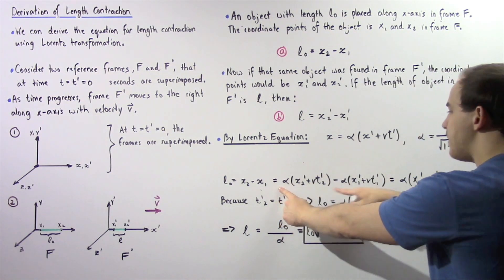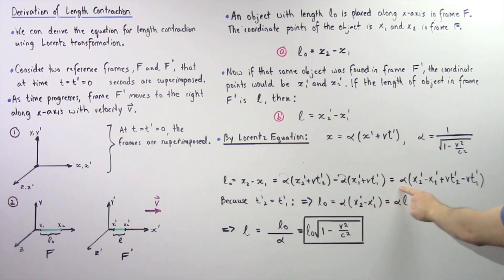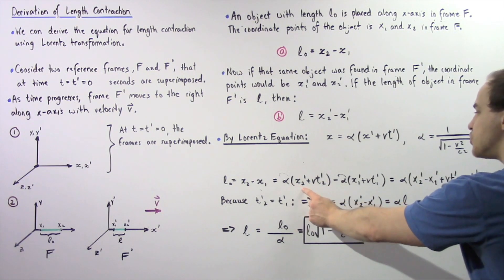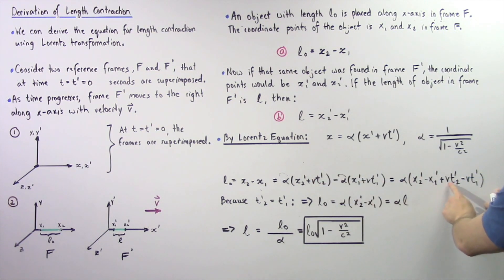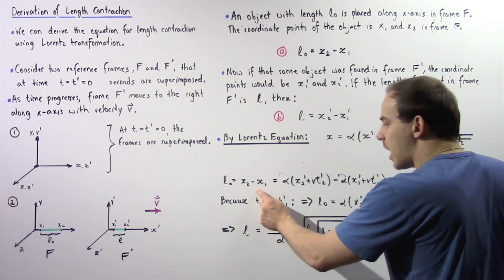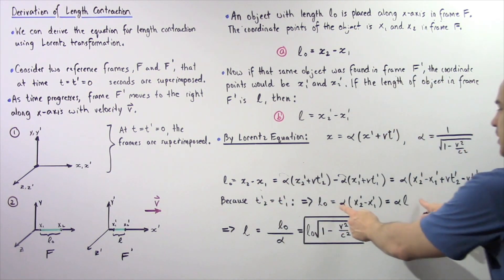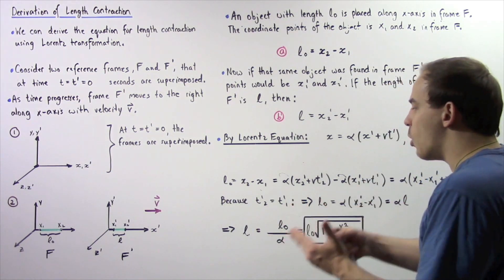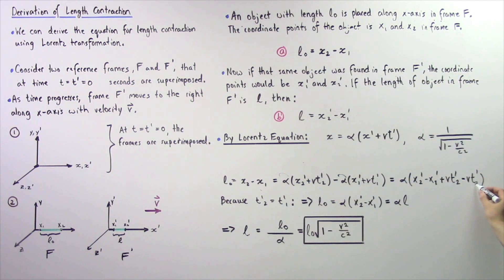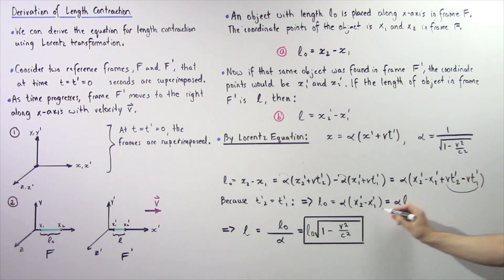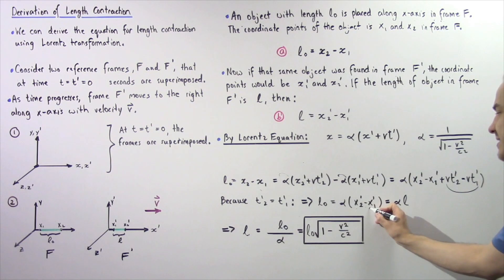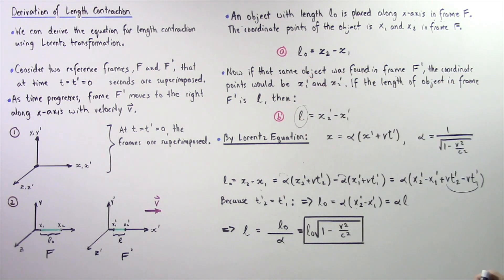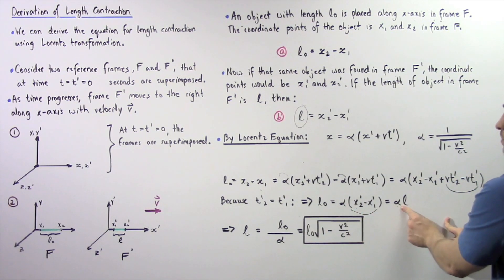Beginning with equation A, L0 equals x2 minus x1, we substitute the Lorentz transformation so that x2 equals alpha times x2' plus v times t2', and similarly for x1. We can factor out alpha, giving alpha multiplied by (x2' minus x1'). Because we take our measurement at the same moment in time, t2' equals t1', so those terms cancel. We're left with L0 equals alpha multiplied by (x2' minus x1'), and since x2' minus x1' equals L from equation B, we get L0 equals alpha times L.